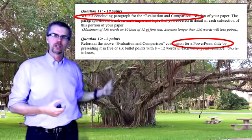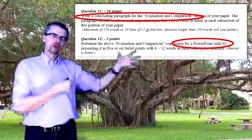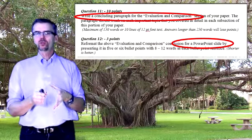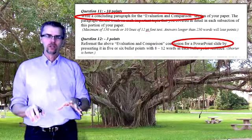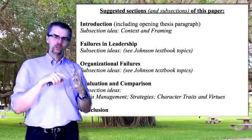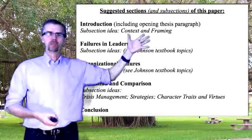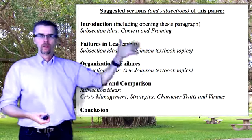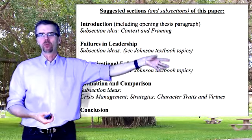Condense it into five or six PowerPoint bullets and give me that for question number twelve. By the time you've answered all of these questions for quiz number two to this point, your draft paper should be almost ready to write. You should be able to sit down with these quiz answers and start typing away, knowing where you're going in the Johnson textbook to support your argument in the they said section — the failures in leadership and organizational failure sections.